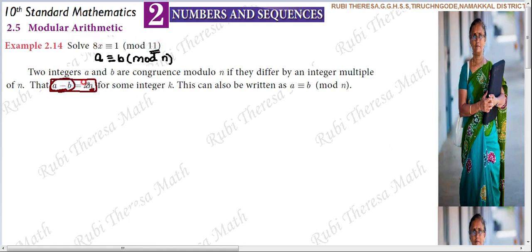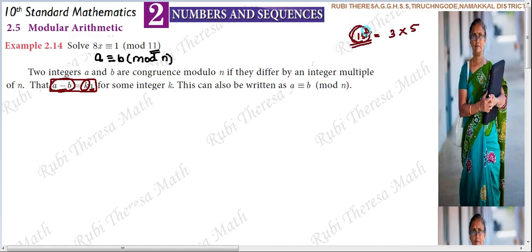That means A minus B equals kN — the difference will be a multiple of N, where N is a divisor. For any integer k, for example, if a minus b value is 15 and mod is 5, then 15 is a multiple of 5 — the 3rd multiple, since 5 into 3 is 15. So the difference should be a multiple of the divisor you choose.